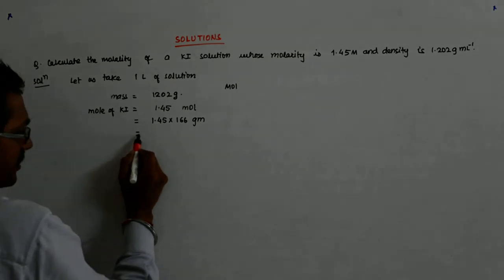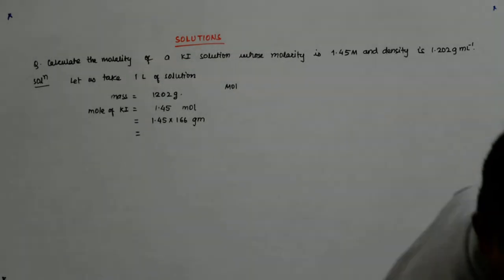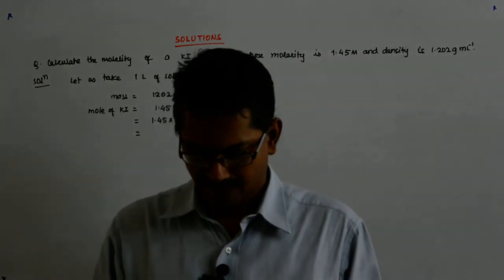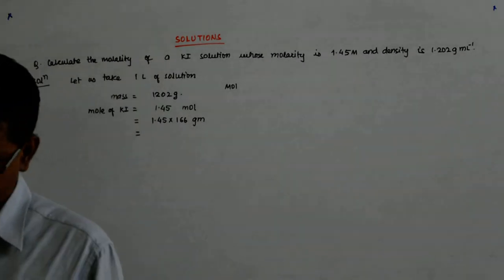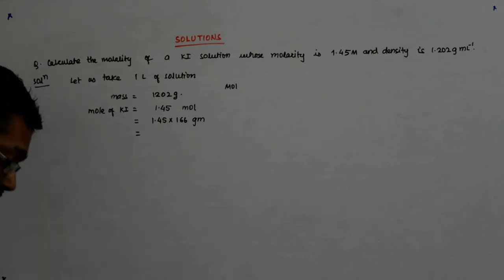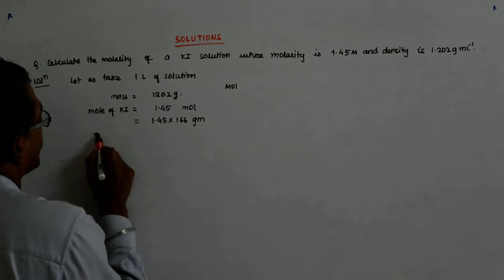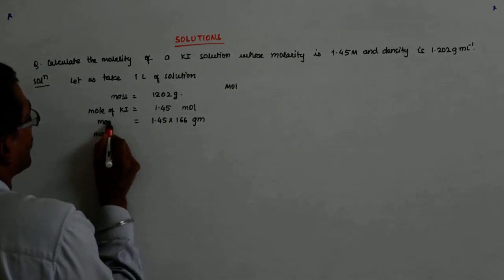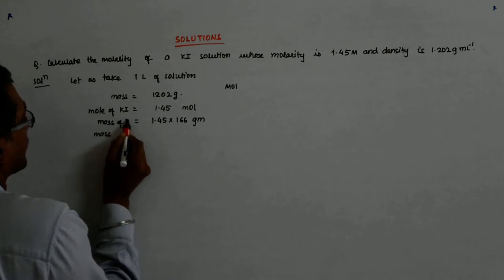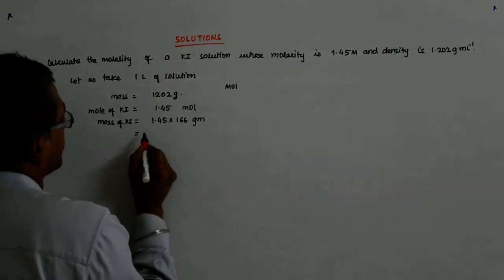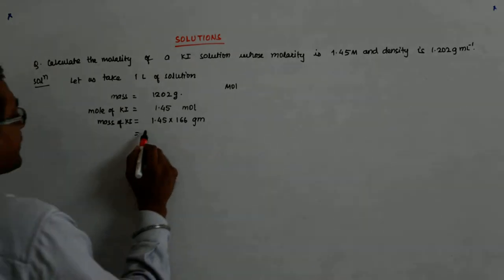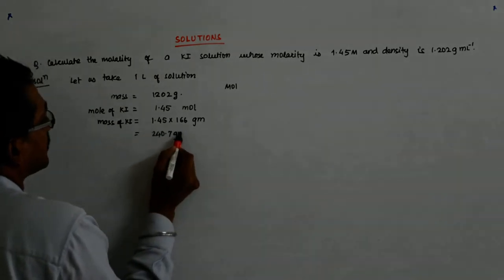Now that is equal to, let me use the calculator, so it is 1.45 into 166, so it is 240.7. So mass of KI is equal to so much, which is equal to 240.7 grams.